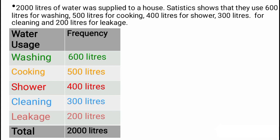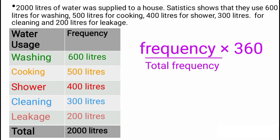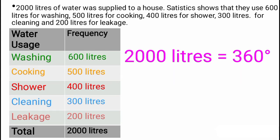We have the frequency in liters, but we need to make it appear in ratio of degree. Because your pie chart is made of sectors, and sectors can only be accurately measured in form of degrees, we need to convert these frequencies to degrees. A circle has 360 degrees, so we solve to ratio 360. Take down this formula: frequency over total frequency, multiplied by 360 degrees. It's just like saying 2000 liters is equal to 360 degrees.